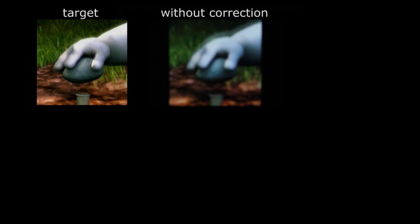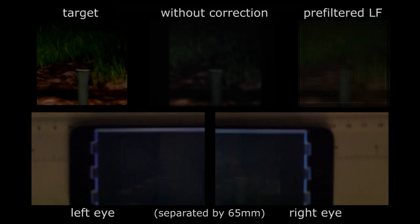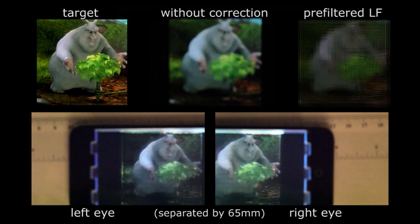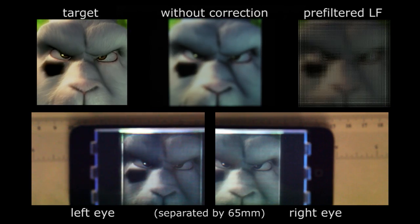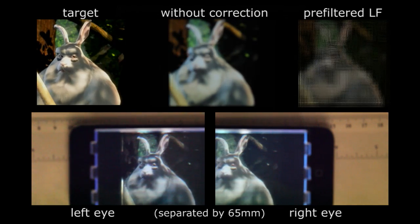We see the target video and the capture video without correction on a conventional display. With the pre-filtered light field video on top right, the captured images are much sharper, as shown on the bottom, and the optimization allows two eyes separated by a 65mm distance.